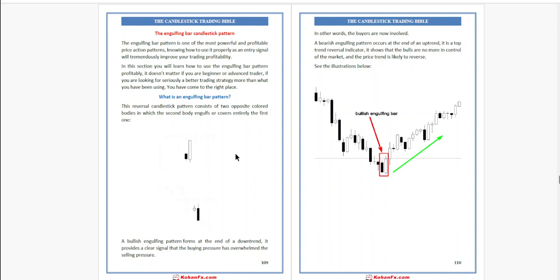This reversal candlestick pattern consists of two opposite colored bodies in which the second body engulfs or covers entirely the first one. A bullish engulfing pattern forms at the end of a downtrend. It provides a clear signal that the buying pressure has overwhelmed the selling pressure.